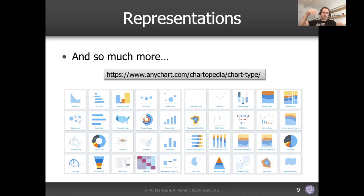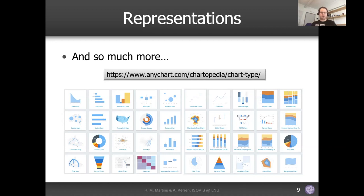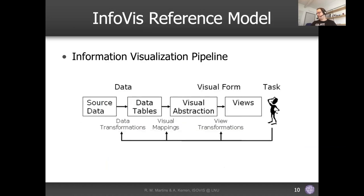There are catalogues of visualization types available online. If you go to the URL shown, you can explore the space of chart types — each one has information about whether it's 1D or 2D, what kind of information it conveys, and so on. I strongly recommend checking this out.